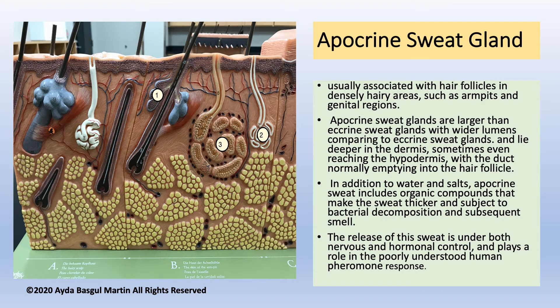Apocrine sweat glands are labeled with number 3 — number 1 being the sebaceous gland and number 2 the eccrine sweat gland. Apocrine sweat glands are usually associated with hair follicles in densely hairy areas such as armpits and genital regions. They are larger than eccrine sweat glands with wider lumens, and they lie deeper in the dermis, sometimes even reaching the hypodermis, with the duct normally emptying into the hair follicles. In addition to water and salts, apocrine sweat includes organic compounds that make the sweat thicker and subject to bacterial decomposition and subsequent body odour. The release of this sweat is under both nervous and hormonal control and plays a role in the poorly understood human pheromone response.